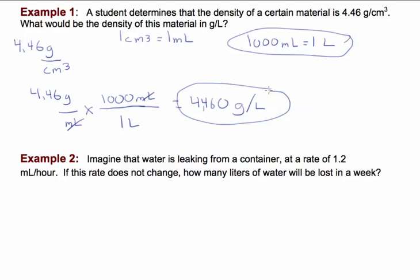Let's practice another one. We have water leaking from a container at a rate of 1.2 milliliters every hour. If the rate's constant, how many liters do we lose in one week? We want units of liters per week. We know our relationship between milliliters and liters is right up here, so we can do that step first. But in this case, milliliters is on the top, so in our conversion factor, it's going to go on the bottom.